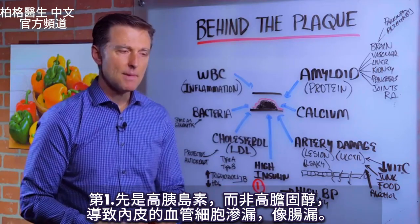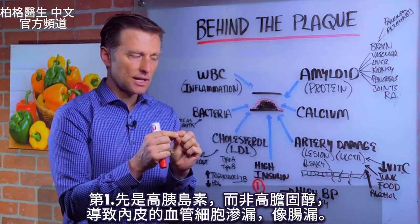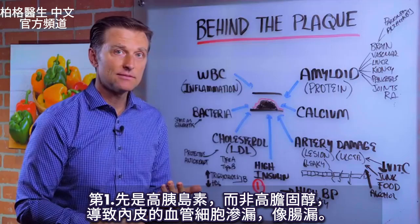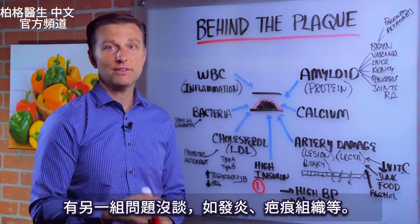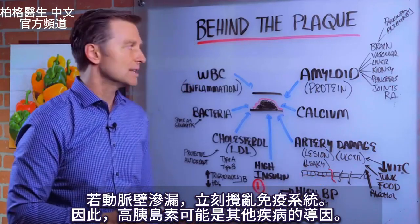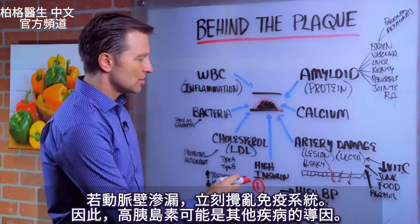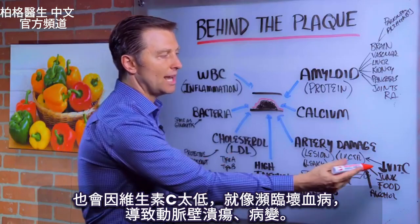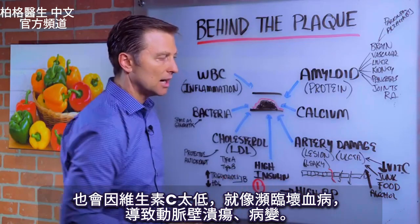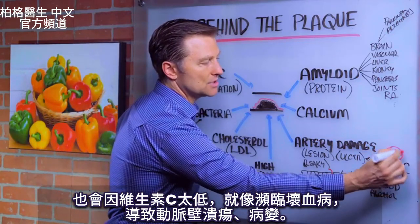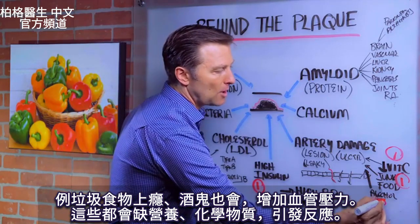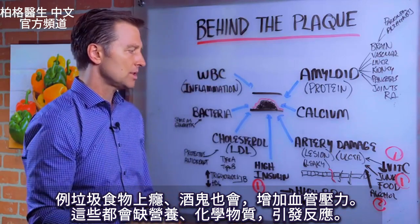You start off with high insulin. When you have high insulin, it makes the cells in the vascular system — the little cells that compose what's called the endothelium — it creates a leak in those cells. Very similar to leaky gut, where you have inflammation and scar tissue and the whole thing. So you have this little leaking through the artery wall, and you're going to stir up a hornet's nest with the immune system. It could be other things too: very low vitamin C, which is almost like borderline scurvy, can create the same ulcers or lesion in the artery wall. A vitamin C deficiency, being a junk food junkie, a lot of stress in the vascular system, being an alcoholic — all these nutritional deficiencies and chemicals can start this reaction.